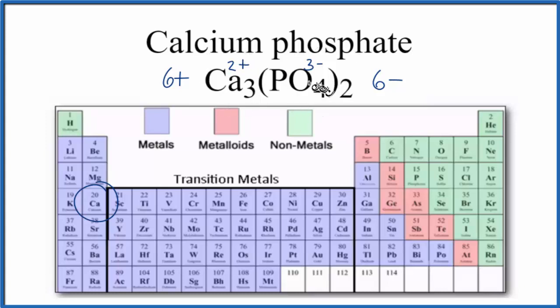And because we have a positive and a negative, they're attracted to each other. Since the ions are attracted, it's an ionic bond.